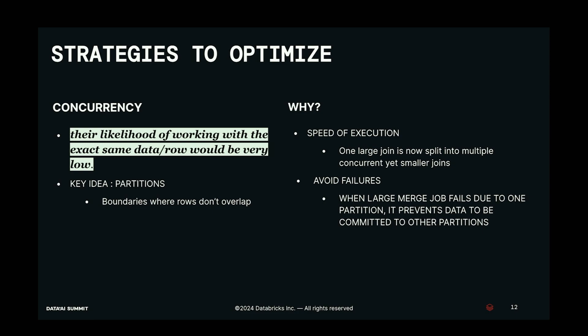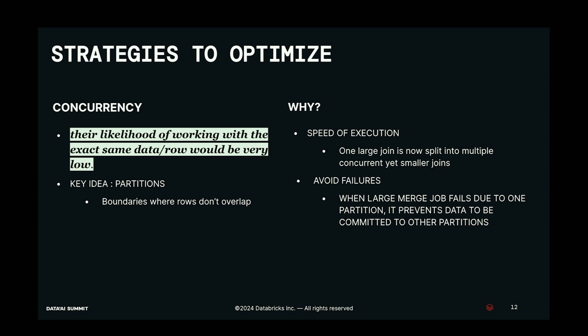Another important point is avoiding failures. When you have a large merge job and it fails because of just one partition, it prevents data for all partitions from being written into your Delta table. If you have broken it up into partition-level jobs, you only need to fix and rerun that one failing partition — other partitions' data is still successfully written. This is the core strategy.